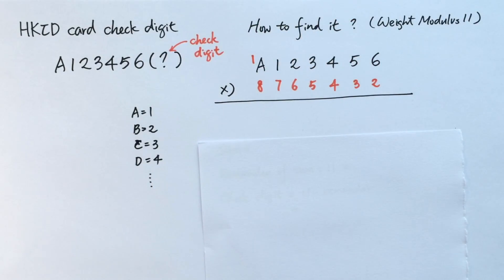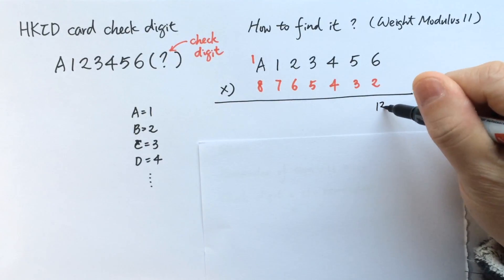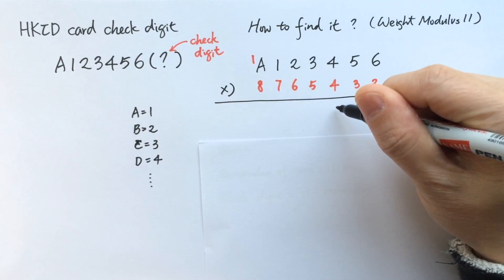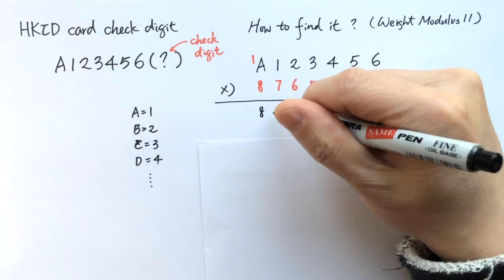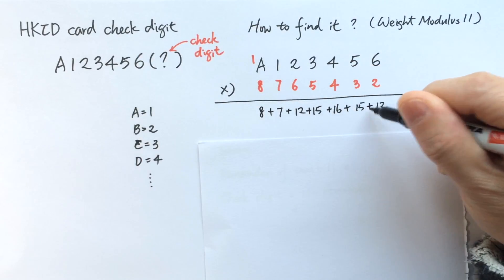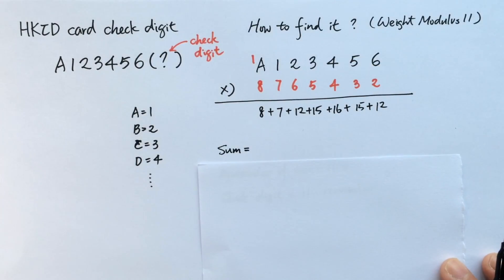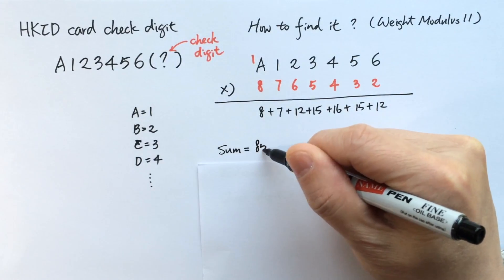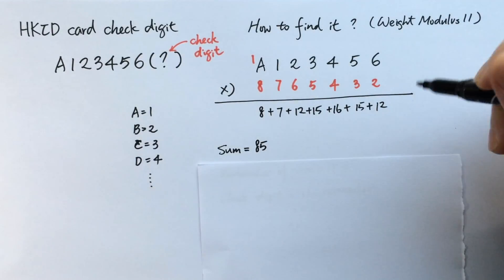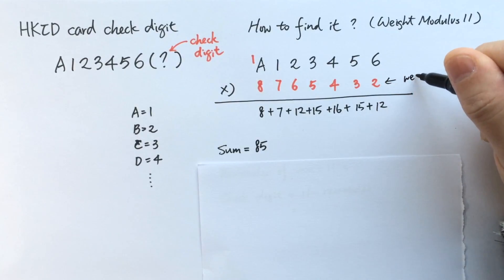And now we can do a multiplication. So 6 times 2, you get 12, this is 15, and we add up all these products and the total sum is 85. So remember, we have to multiply each digit or letter by a weight.